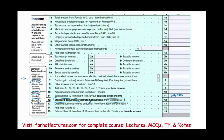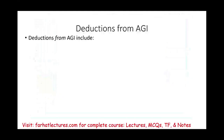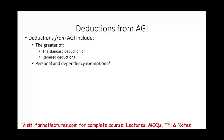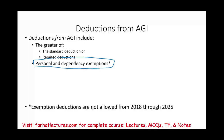Itemized deduction goes on your Schedule A. Deductions from AGI — you will take the greater of these two: the standard deduction or the itemized deduction. Also, you can take personal and dependency exemptions, but those are suspended from year 2018 to 2025. So you don't have to worry about them, because the law will reset starting 2026, and you will have those personal and dependency deductions again.